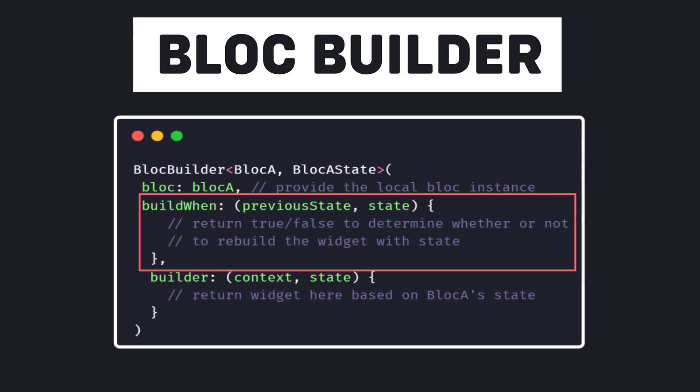buildWhen should only be used for performance optimization. It will be invoked on each bloc state change and it takes the previous state and current state, and must return a bool which determines whether or not the build function will be invoked. The previous state will be initialized to the state of the bloc when the BlocBuilder is initialized.